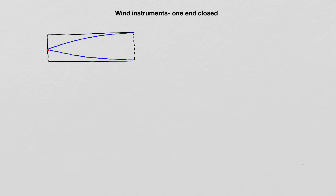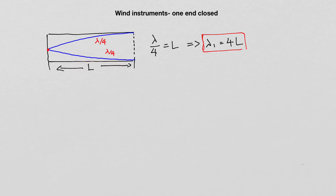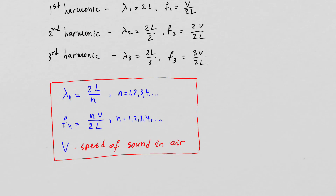The first harmonic has a node at the closed end and an antinode at the open end, with both branches equal to a quarter of the wavelength. A quarter of the wavelength matches the physical length L of the pipe, so λ₁ = 4L. We can now see the difference compared to two open ends, where the first harmonic wavelength was twice the length of the pipe.